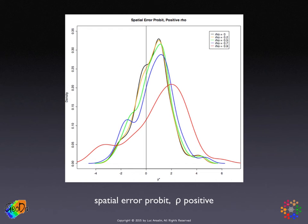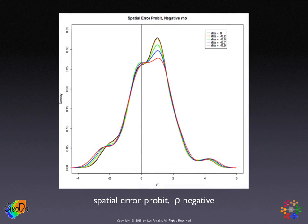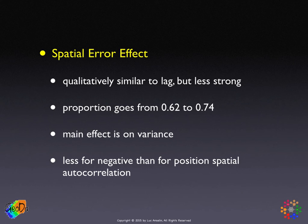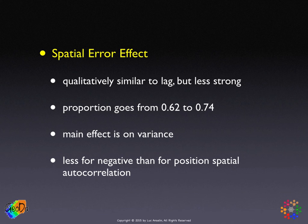We do the same thing for the error model, first with a positive spatial autoregressive coefficient. We see something very similar to the lag model, but not as pronounced — again a shift to the right of the curves and they get thicker, but less so than in the lag model. Similarly, the effect of a negative spatial autocorrelation coefficient is much less. The main effect of the error spatial autocorrelation is on the variance, and the sign again matters — much less effect for negative spatial autocorrelation than for positive spatial autocorrelation.